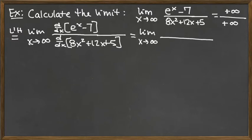So on the top, the derivative of e to the x is itself, and then the derivative of the constant there is 0. So we just have e to the x on the top. On the bottom we have a polynomial that we can take the derivative of. So 8x squared, that would be 8 times 2 is 16, and then x to the first power when we drop the power by 1. And then we have plus 12.